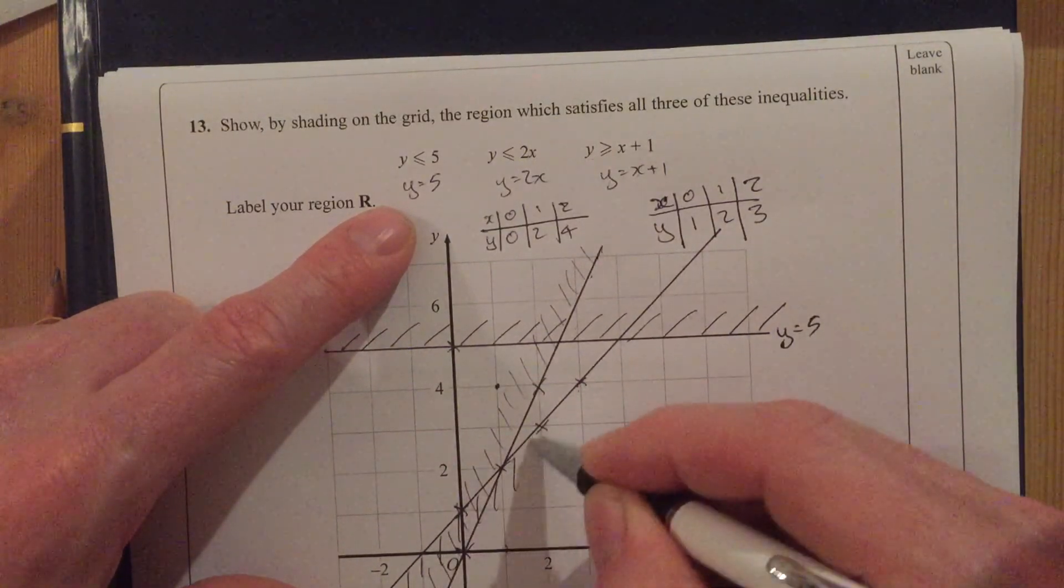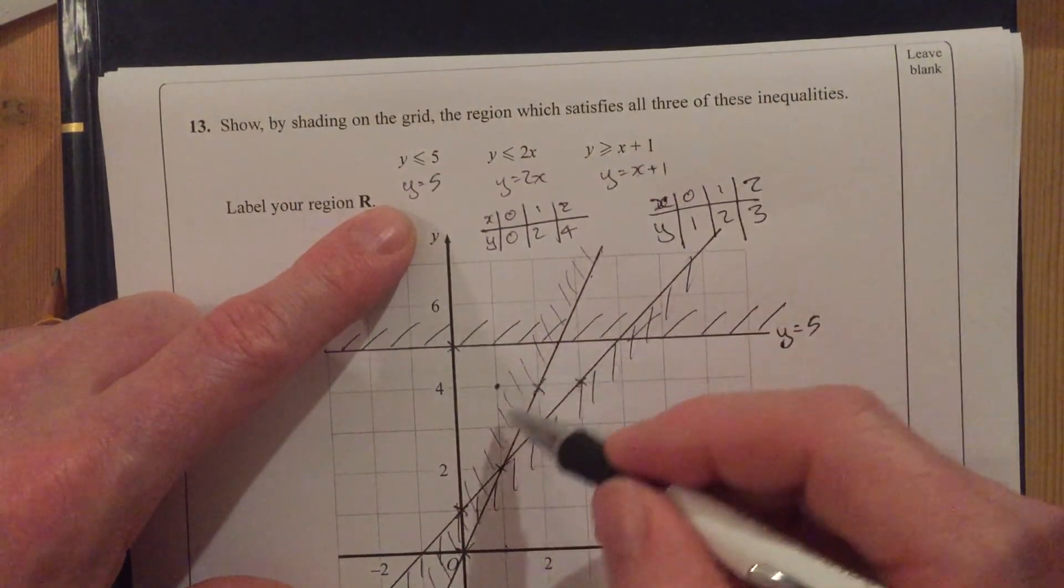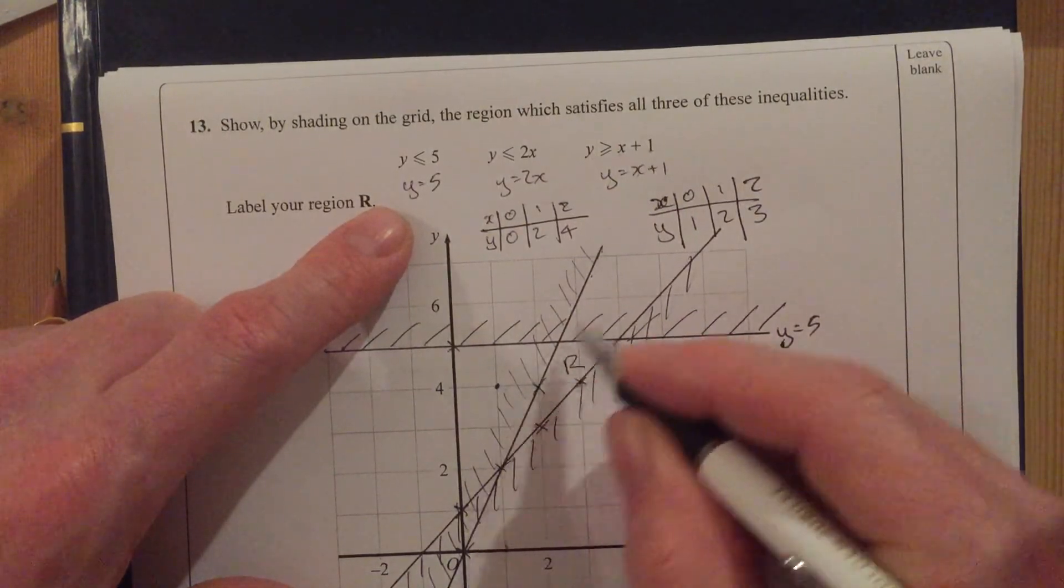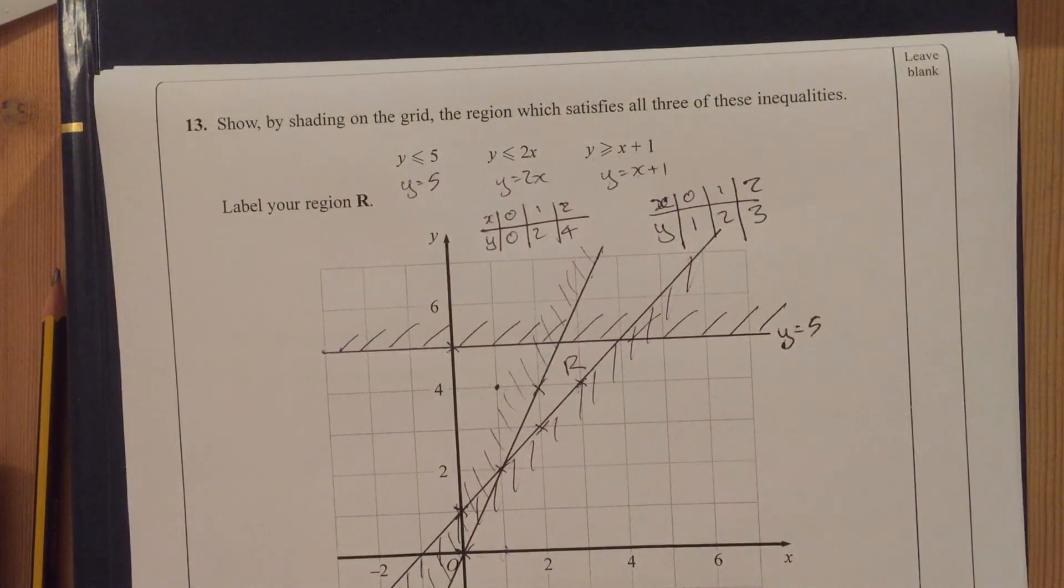I'm going to shade this side. So I don't want this region here because it wouldn't satisfy this one. I want this region in here because that's got all the bits that are surrounded. I've got the non-shaded bits there. I hope that makes sense.